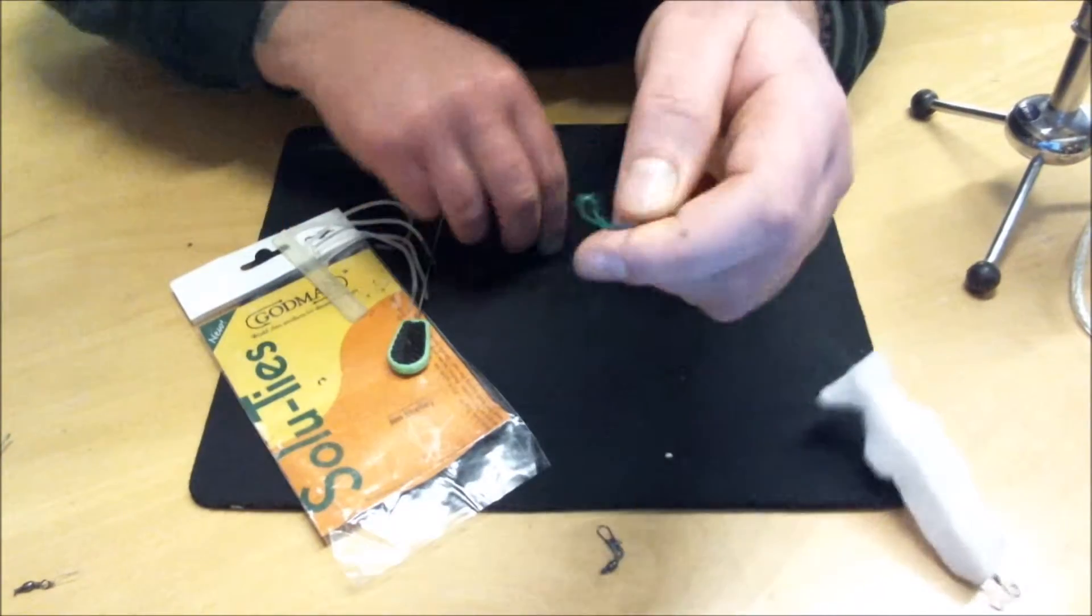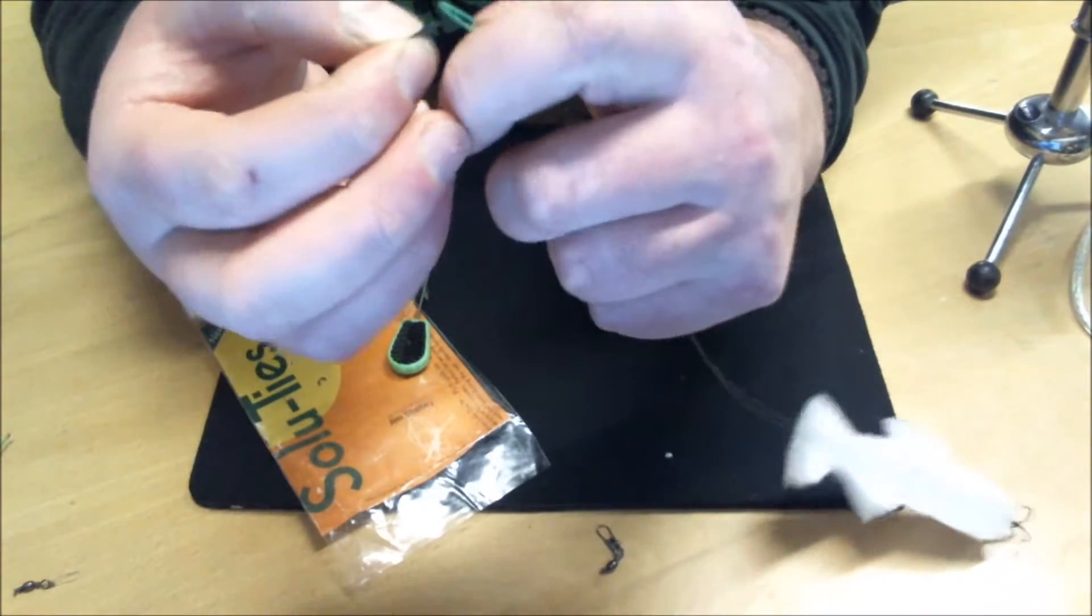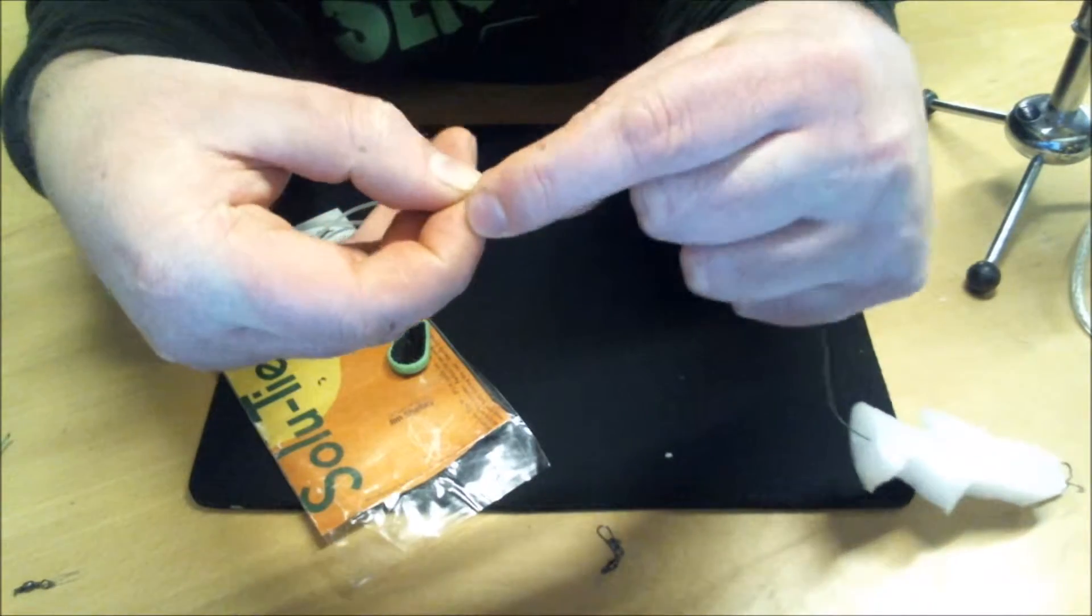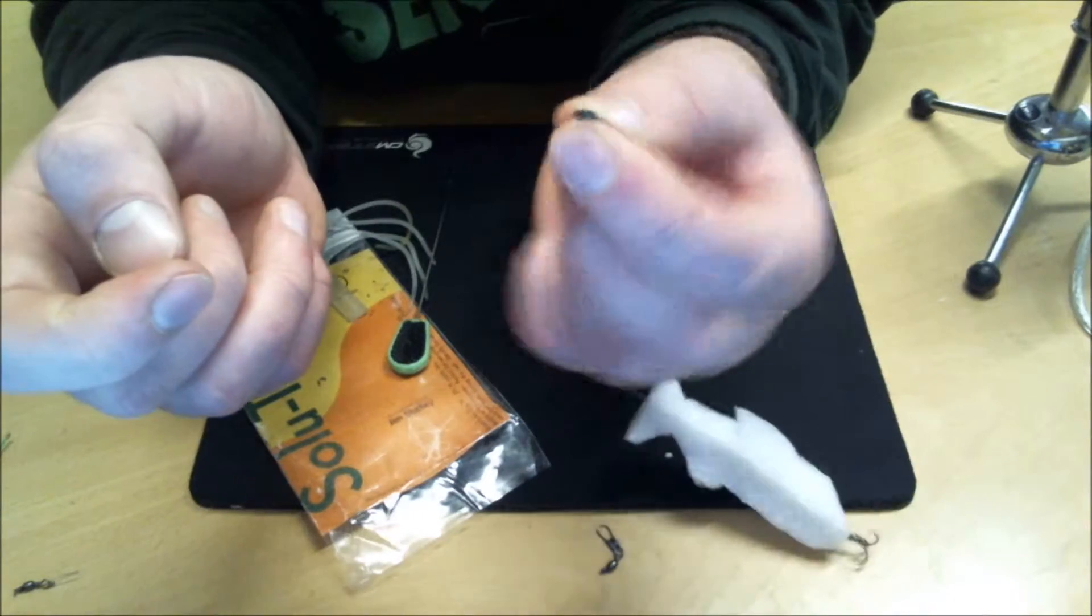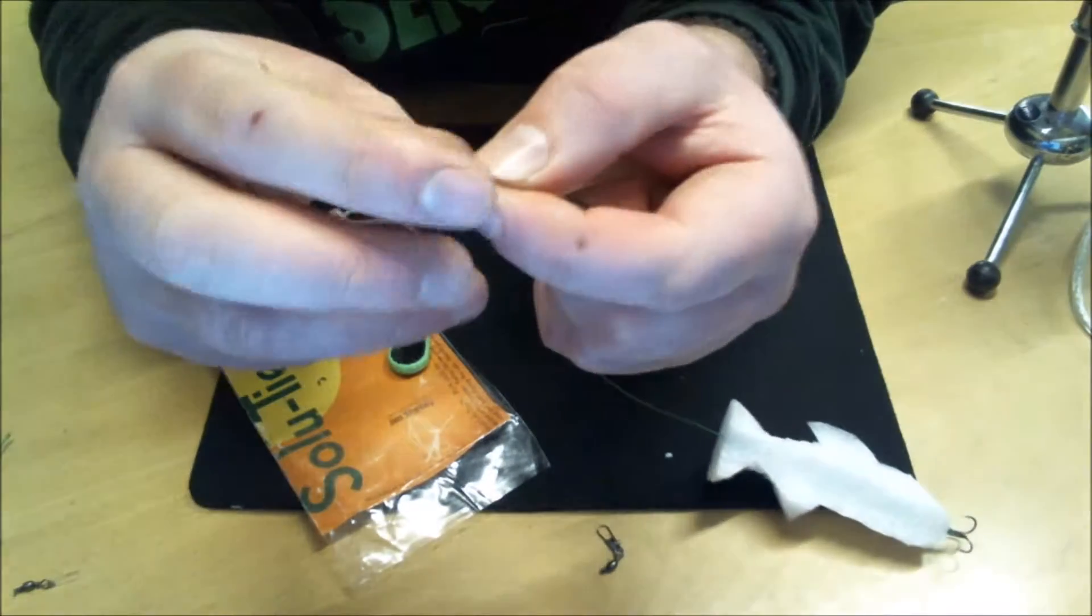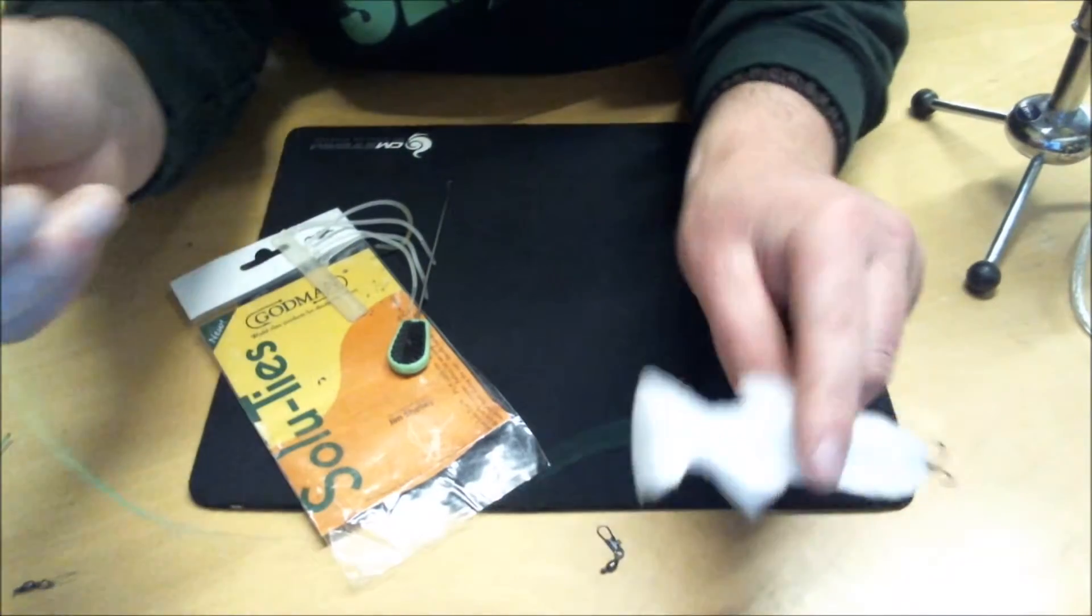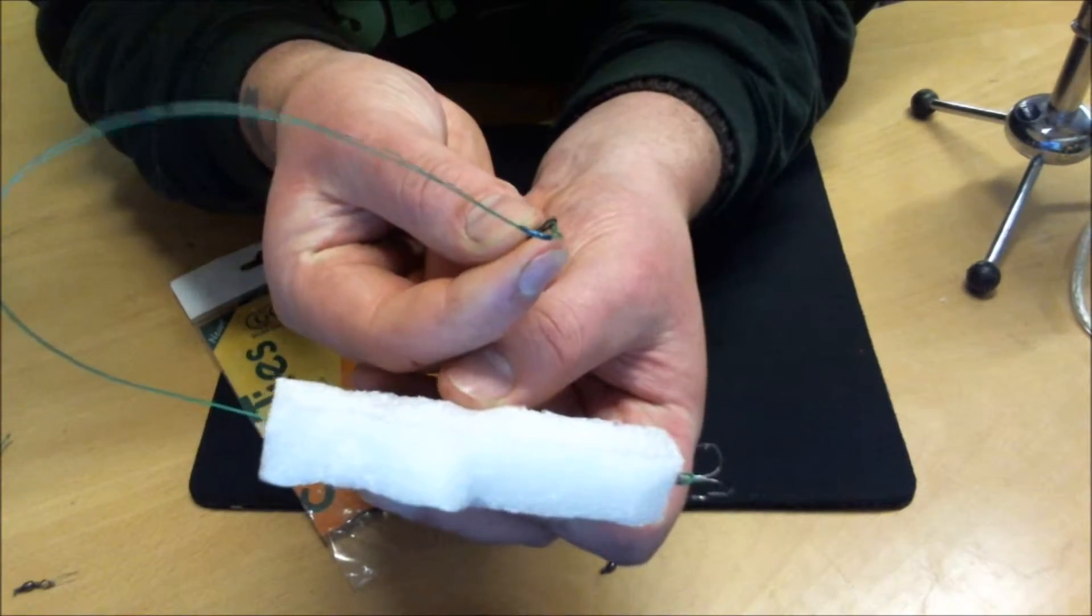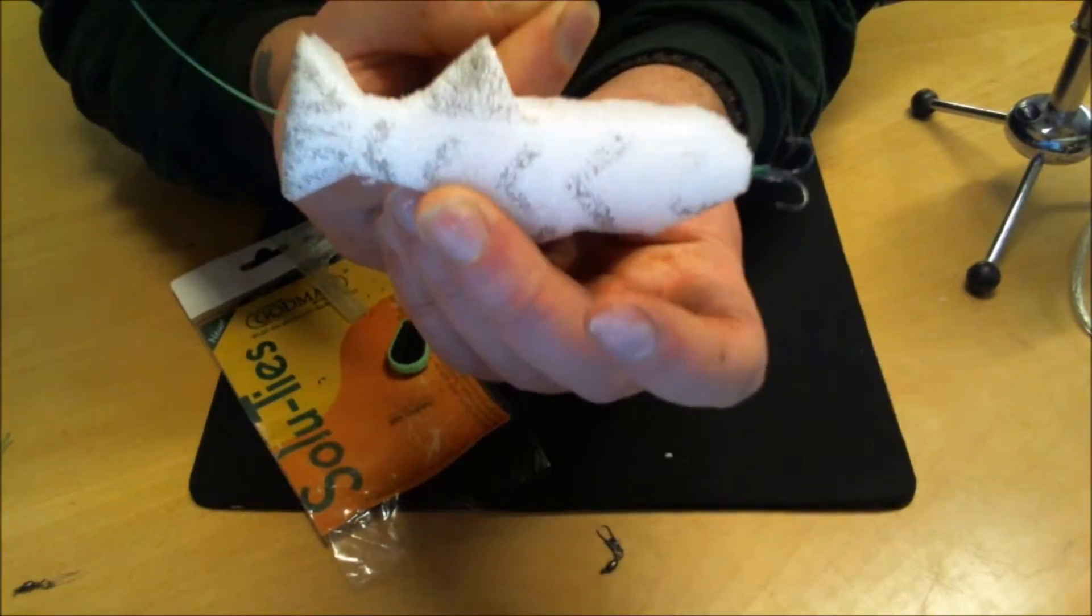So your quick link will now go onto that, or your quick change swivel, whichever. It hooks on, and then that would hook onto your lead clip or line, whichever way you want to set your rod up. So that's it. That's the rig, ready to go with your fish, presented very well.